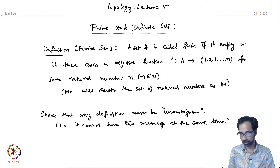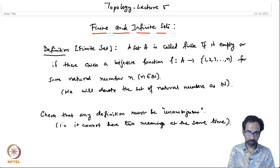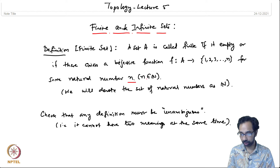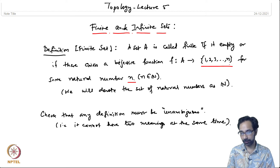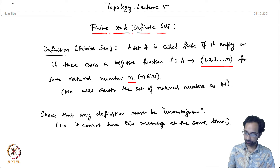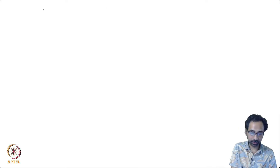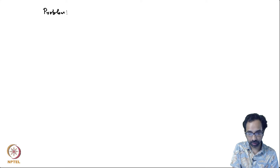Let us check whether our definition for finite sets is unambiguous. Note that here we are choosing a natural number n and claiming that a set is finite if either it is empty, or there exists a bijective function from A to the set of natural numbers from 1 to n. The problem is that the number n is not uniquely determined from the definition.